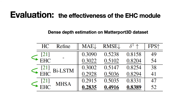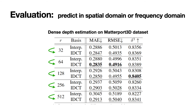We show that our architecture design to flatten feature height is consistently better on both speed and accuracy compared to prior art. To refine the flattened feature, we find multi-head self-attention can achieve better results than other refinement modules we tried. We find predicting in the DCT frequency domain is consistently better than directly predicting in the spatial domain across all different numbers of output channels.